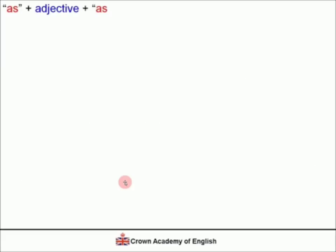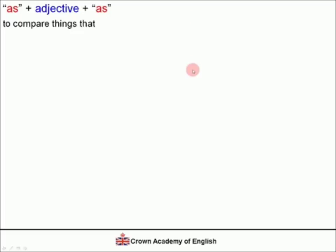We have a structure in English: the word 'as', followed by an adjective, followed by 'as' again. We use this to compare things that are equal — we are comparing two things that are the same.